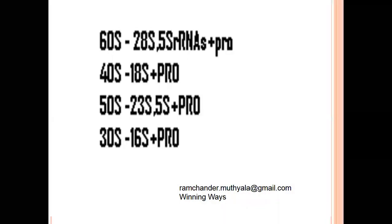rRNA is present in the cytoplasm. In eukaryotes, during the translation mechanism, we can clearly identify the ribosomal complex. This ribosomal complex contains 60S and 40S subunits — 60S is the large subunit and 40S is the small subunit. During translation, these two subunits come together to form the ribosomal complex.